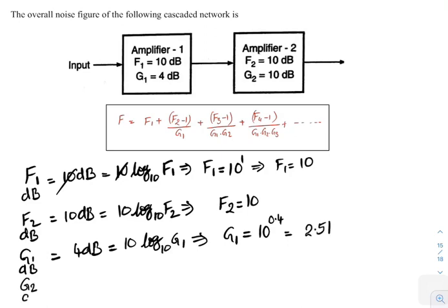Gain 2 in decibels equals 10 dB. If you convert that, its value is G2 equals 10.